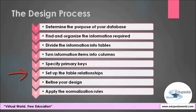The sixth step is to set up the table relationships. Look at each table and decide how the data in one table is related to the data in the other. Add fields to tables or create new tables to clarify the relationships as necessary. The seventh step is to refine your design: analyze your design for errors, create the tables, add a few records of sample data, and see if you can get the results you want. Make adjustments as needed. The eighth and last step is to apply the normalization rules to see if your tables are structured correctly.